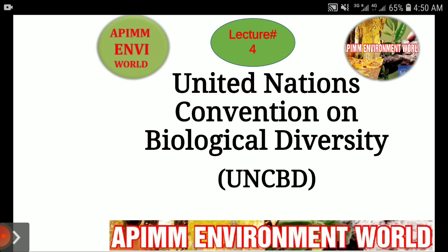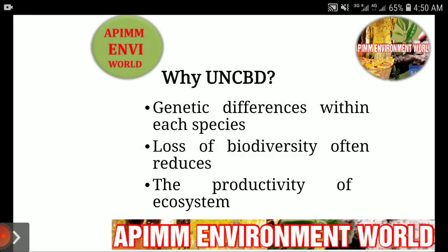As the name indicates, biological diversity refers to the genetic differences within each species — for example, between varieties of crops and breeds of livestock. Another aspect of biodiversity is the variety of ecosystems, such as those found in deserts, forests, wetlands, mountains, lakes, rivers, and agricultural landscapes. Each ecosystem supports a living community of creatures.